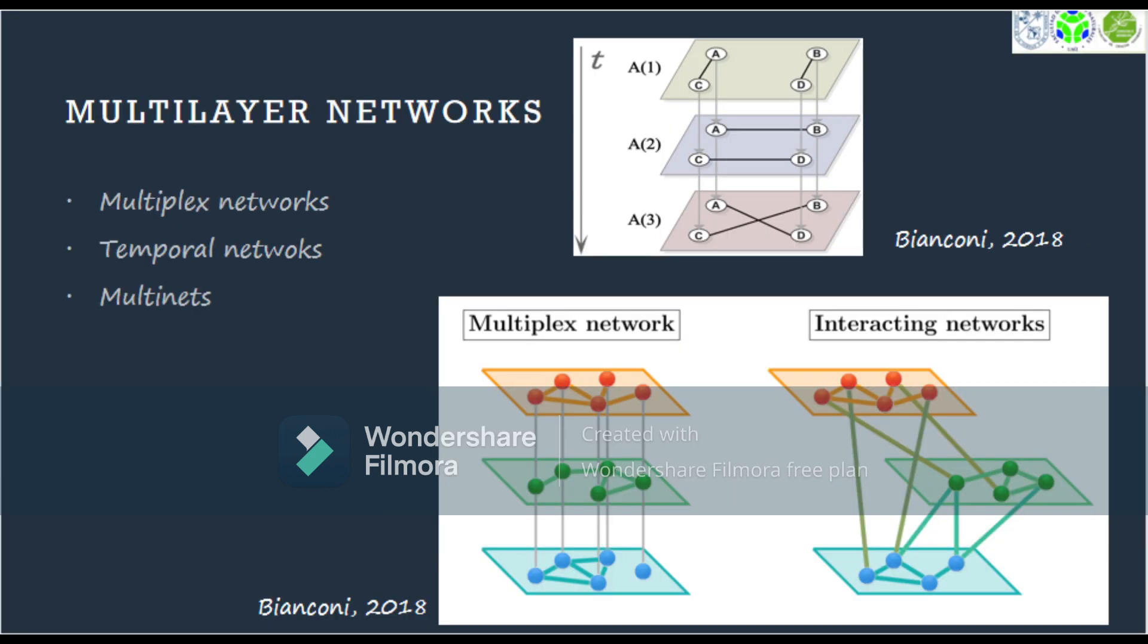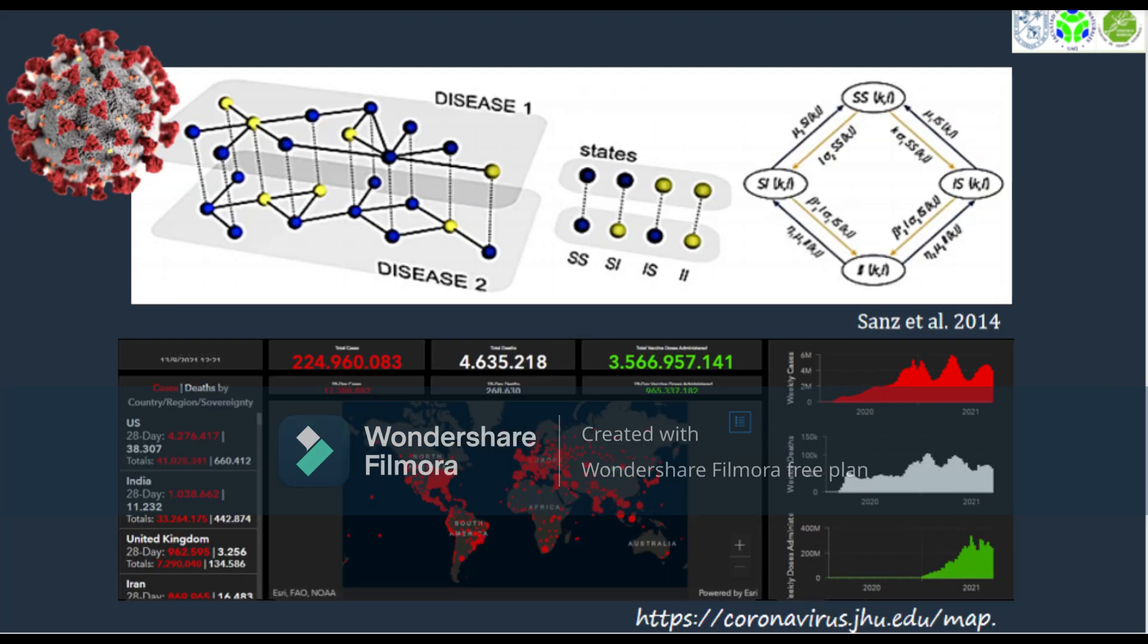Multilayered networks are a new paradigm that expands and generalizes network theory. Within this approach, we can highlight the so-called temporal networks, which allow us to analyze how interactions between the components of a dynamic system change over time.